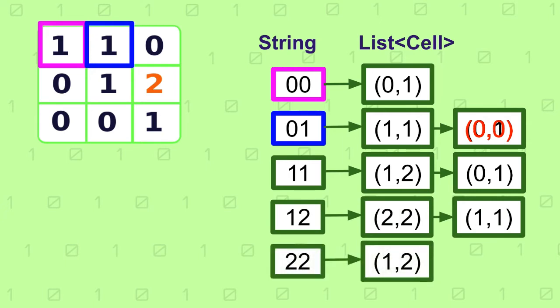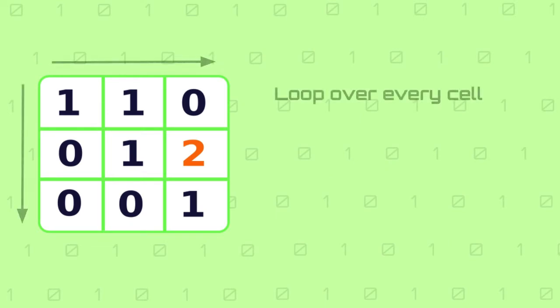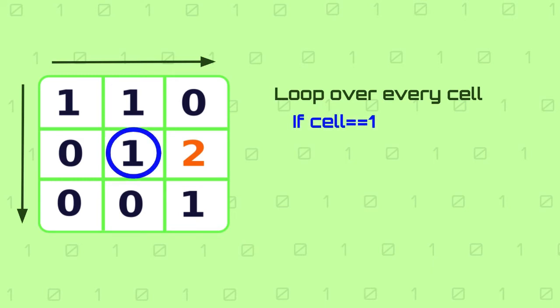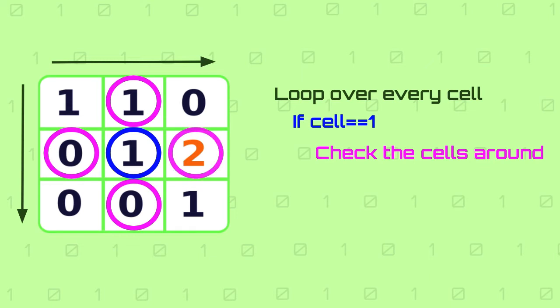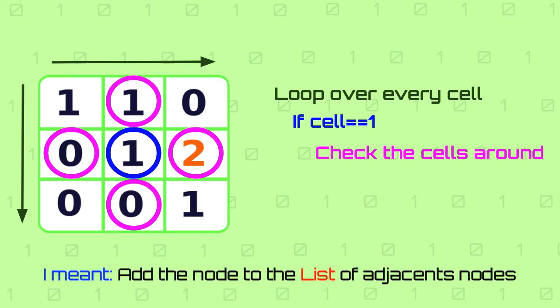So what are the steps we should follow to build the graph in this way? We will loop through every cell in the matrix and if the cell is 1 it means it's accessible. We will look at the four cells around it — the cell above, the cell below, right and left — and if any of those is 1 as well, it means that the nodes are connected, so we will add those nodes to the list of adjacent nodes for that given node.